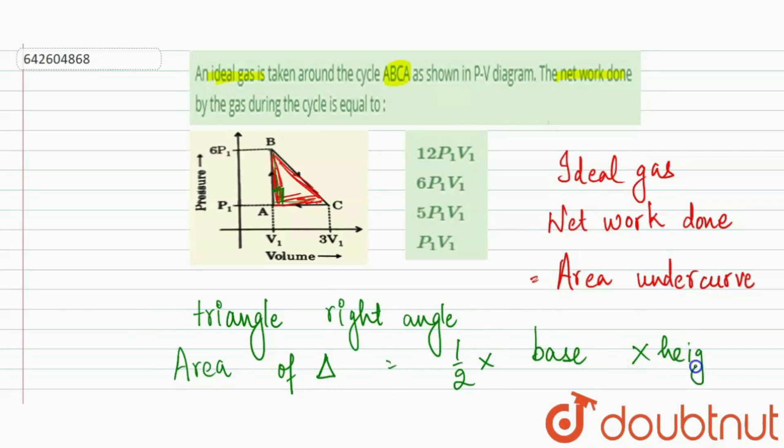So with the help of this formula, we can find out our net work done because net work done is equal to area under curve. And in this PV diagram, our area under the curve is equal to the area of a triangle because area under curve represents a triangle.